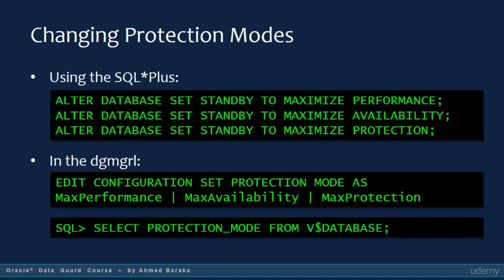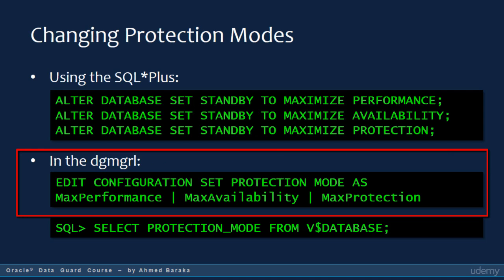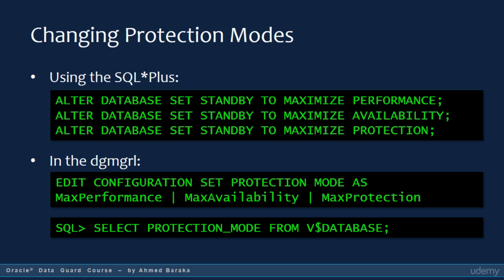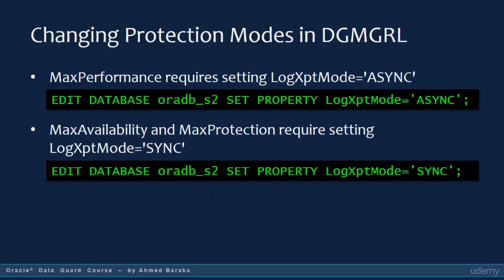Use the commands as shown in the slide to upgrade or downgrade the protection mode in your DataGuard configuration. You can see the commands for both SQL Plus and the DG-MGRL utility. To know which protection mode your DataGuard configuration is running, issue the query: SELECT PROTECTION_MODE FROM V$DATABASE. To change to maximum performance mode, set the LogXPT mode to ASYNC. To change to maximum availability mode, set it to SYNC.